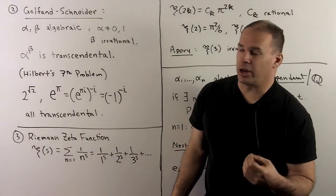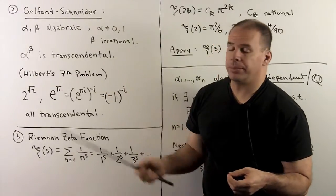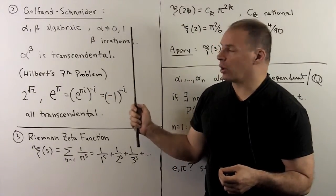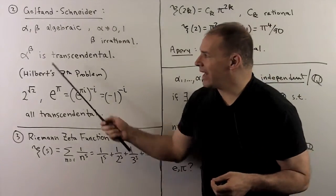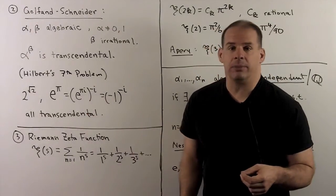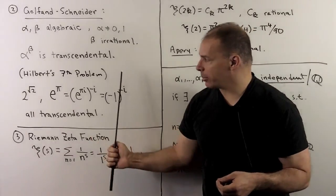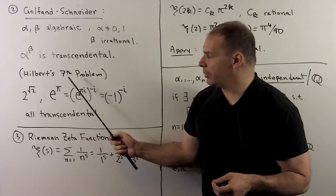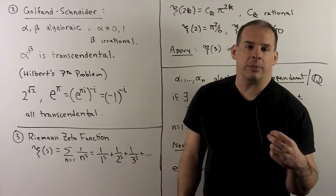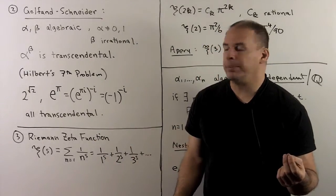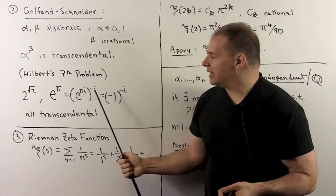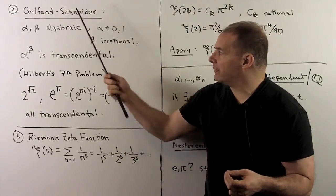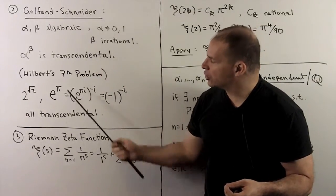The next big result on transcendentals is Gelfand-Schneider. Here, if alpha and beta are algebraic, alpha is not equal to zero or one, and beta is irrational, then alpha to the beta is transcendental. This is Hilbert's seventh problem. For example, we have two to the square root of two and e to the pi. Now e to the pi is a transcendental to a transcendental. So I can rewrite this as e to the i pi to the minus i. This is minus one to the minus i, and Gelfand-Schneider applies. So transcendental.